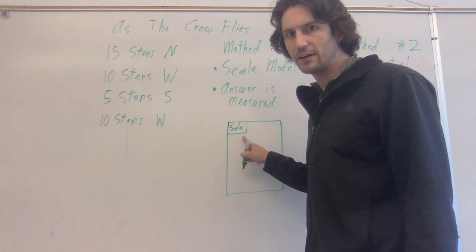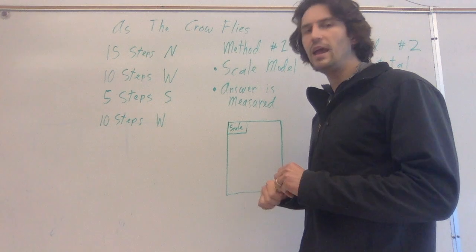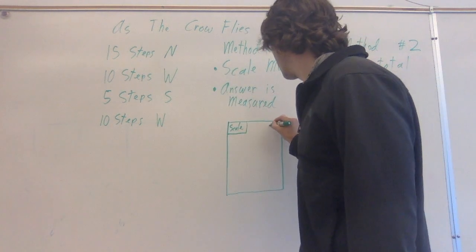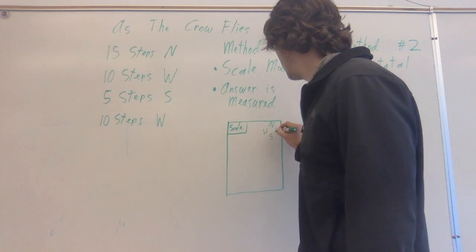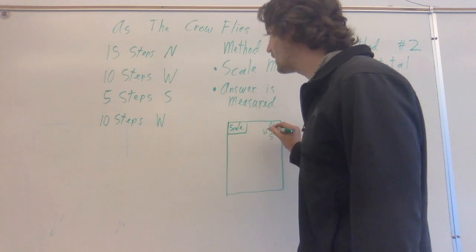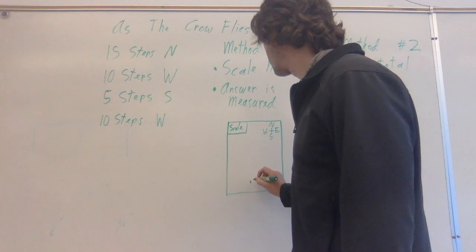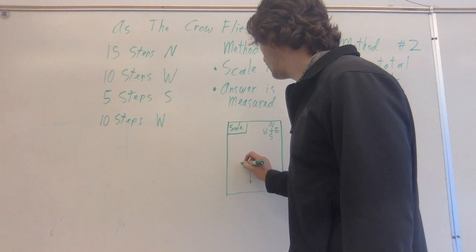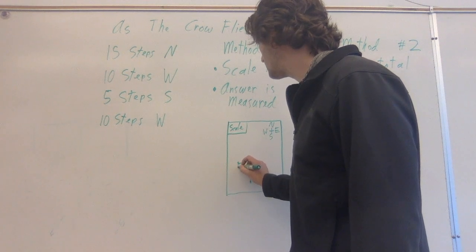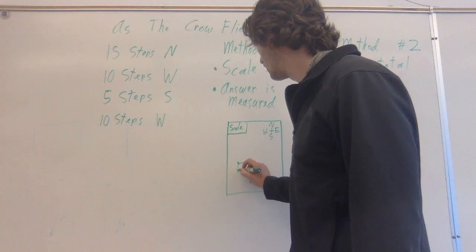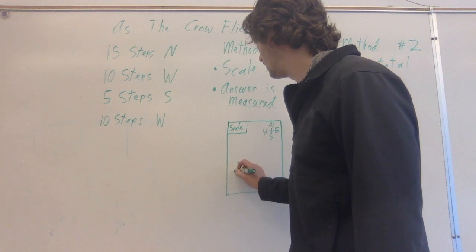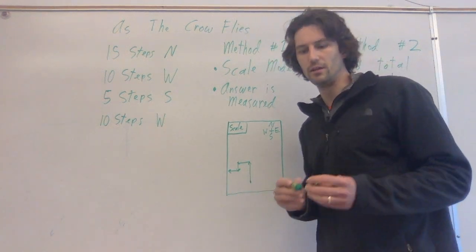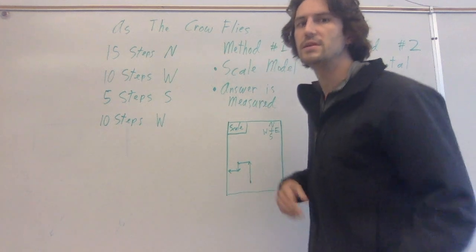Then I'm going to draw these vectors to scale. I'll draw a compass, just so we all agree on directions. I'm going to start somewhere. I'm going to go north, followed by west, followed by south, followed once again. Obviously you're going to do that a little cleaner because you're actually going to measure it and do it to scale. But it's going to be something like that.